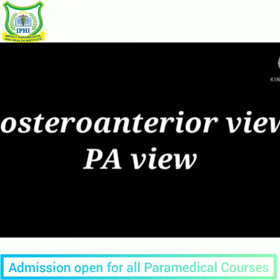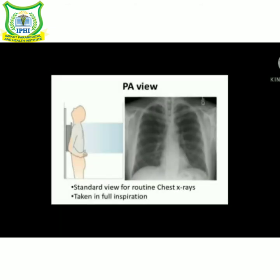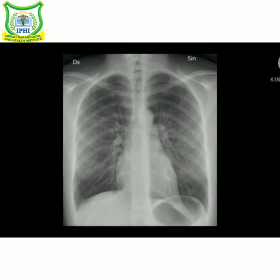The first is posterior anterior view. In this, the patient faces the cassette with chin extended. Upper borders of cassette should be placed 2 cm above the level of shoulder to ensure that apices are included. Shoulders are rotated forward and pressed downward in contact with cassette and the centering is at the level of T4 vertebra.